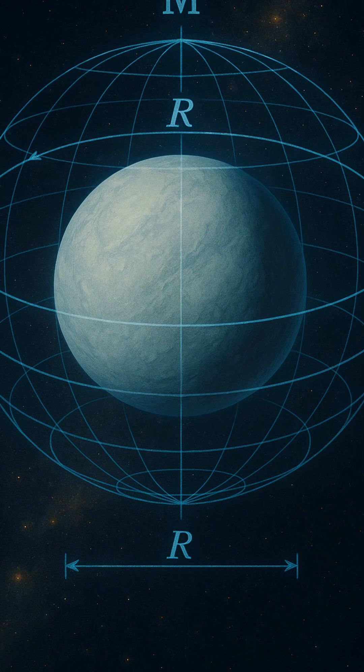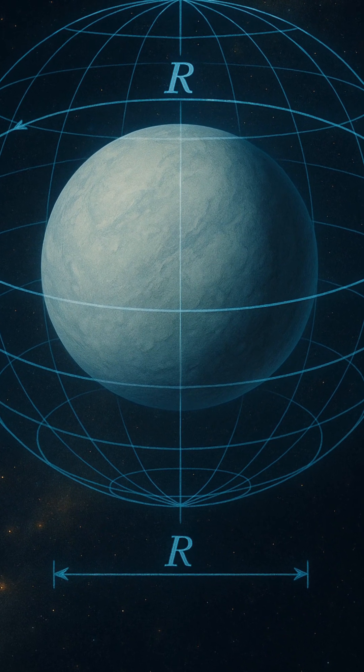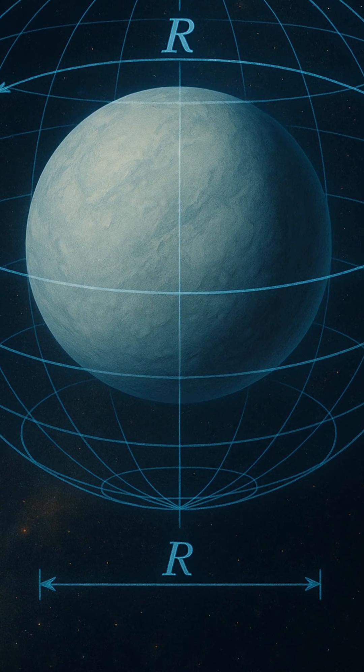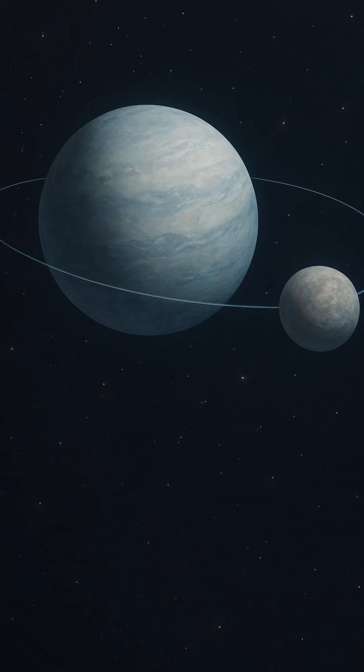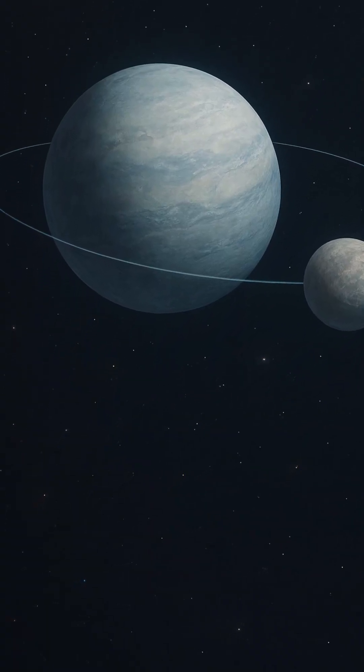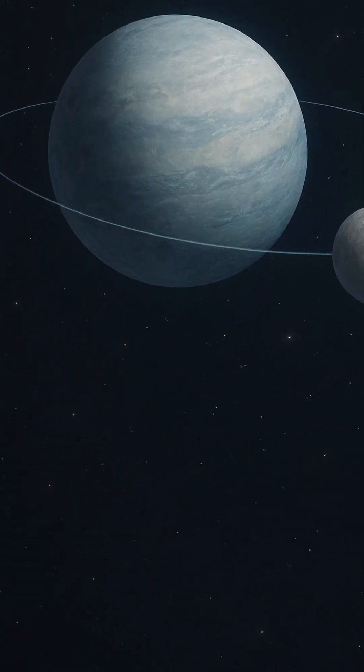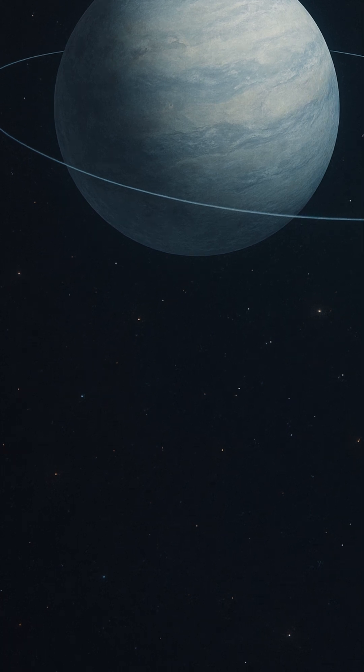But mass is only part of the puzzle. Mass tells us how much matter a planet contains. Density, on the other hand, tells us how tightly that matter is packed. By comparing a planet's mass to its volume, which we estimate from its radius, we can uncover its internal secrets.